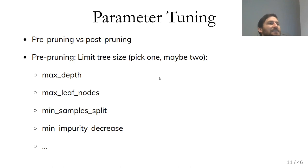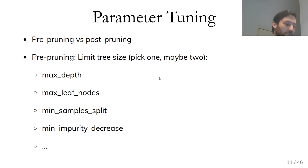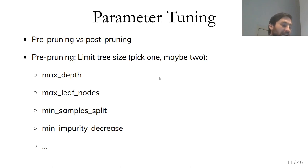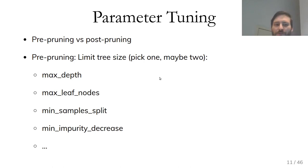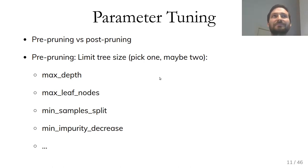For pre-pruning, scikit-learn implements several options: max_depth, maximum number of leaf nodes, minimum samples required to keep splitting, and minimum decrease in impurity, among others. The most common ones are max_depth and max_leaf_nodes, though there are maybe six or seven total. Usually you'd pick one or at most two of them and tune that.